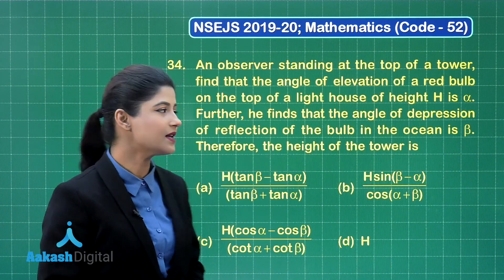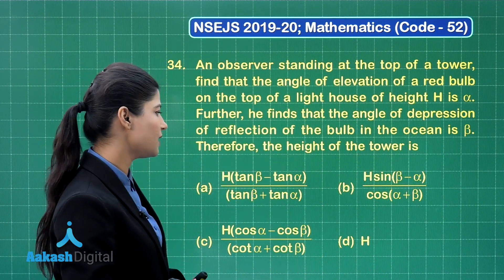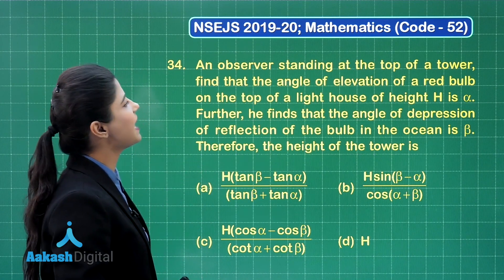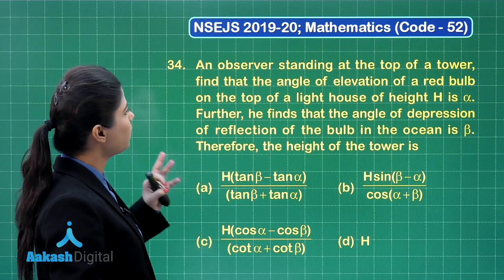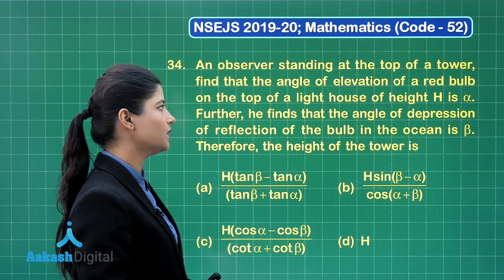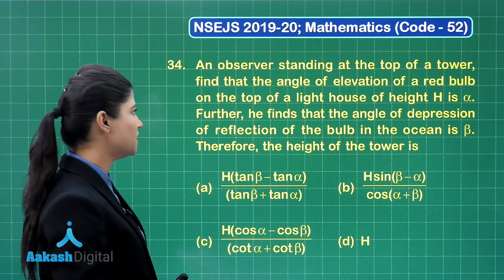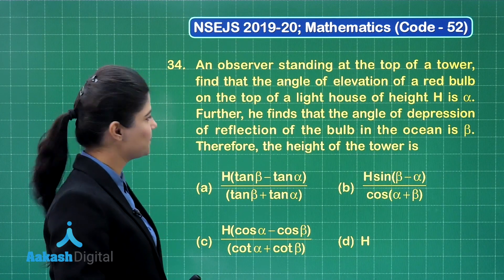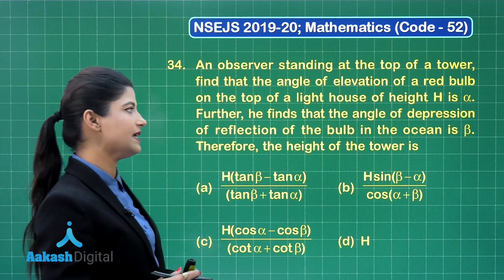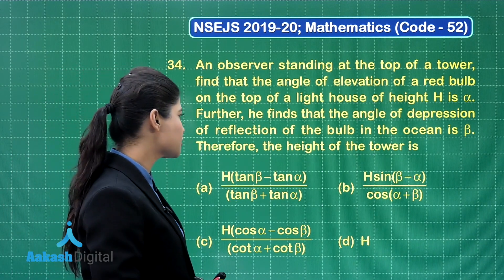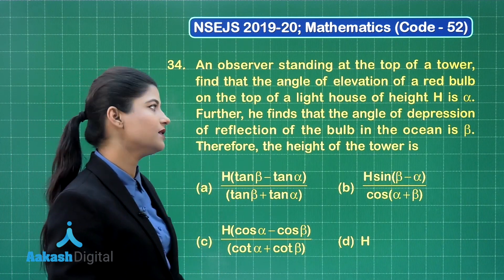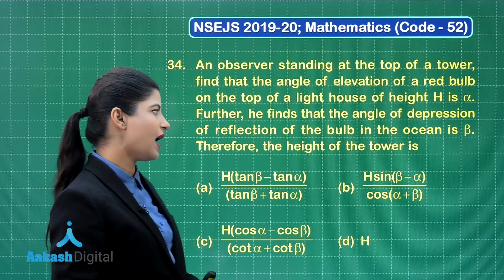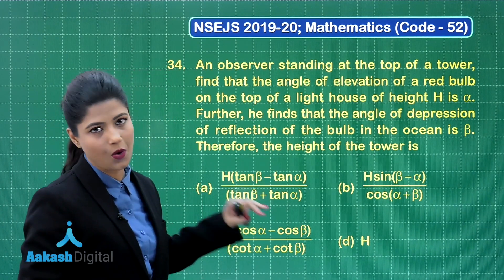Here we have question number 34. It states that an observer standing at the top of a tower finds that the angle of elevation of a red bulb on the top of a lighthouse of height capital H is alpha. Further, the angle of depression of the reflection of the bulb in the ocean is beta. The height of the tower is to be found from the given options.